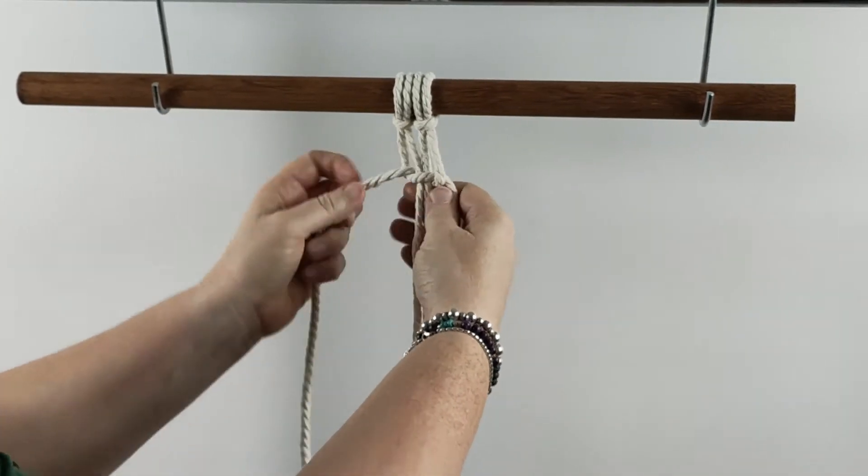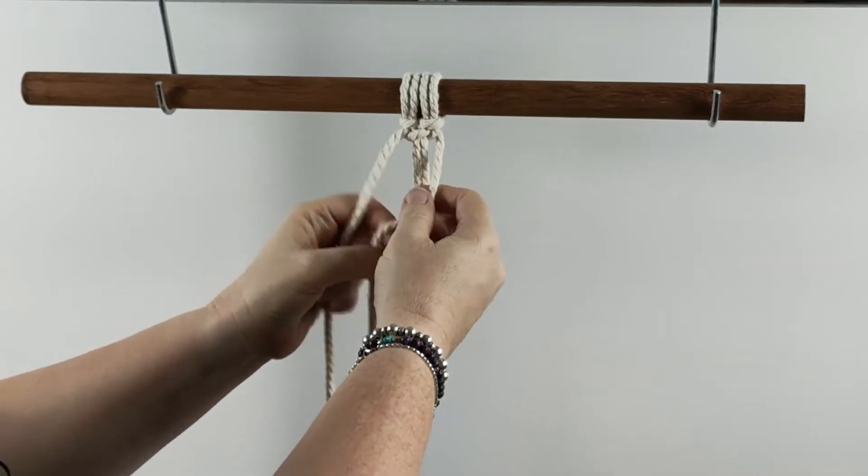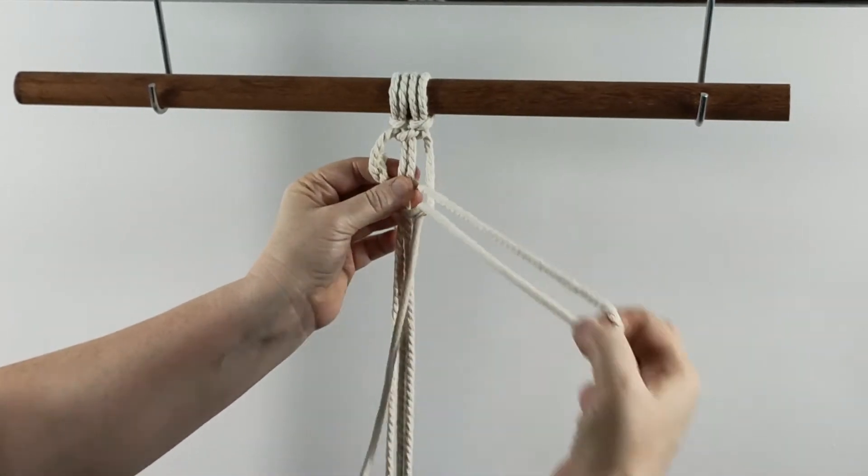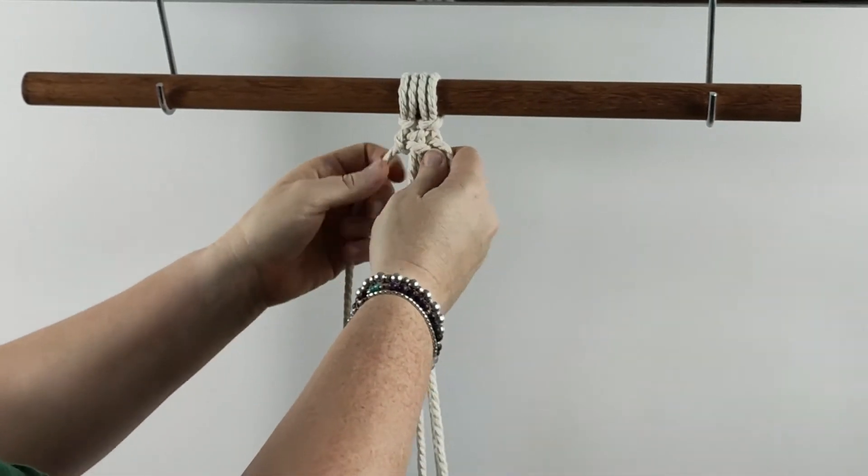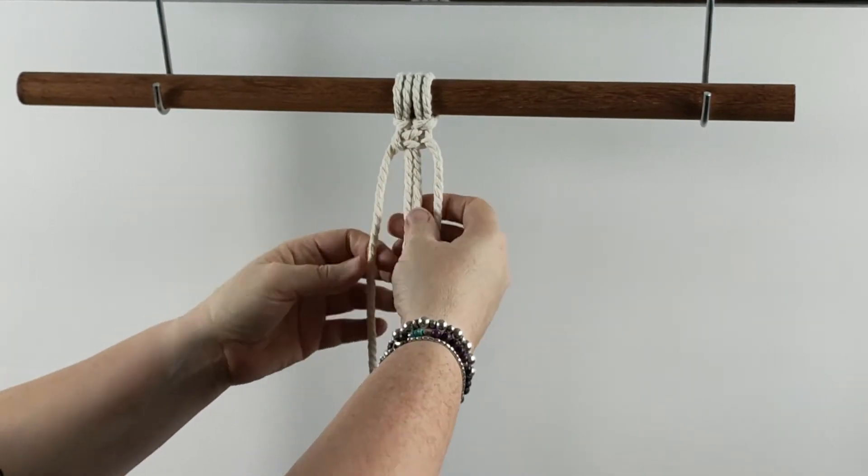So we are doing one square knot and then we leave a bit of a space.